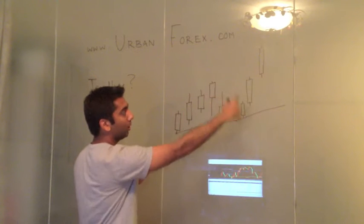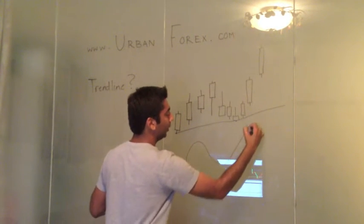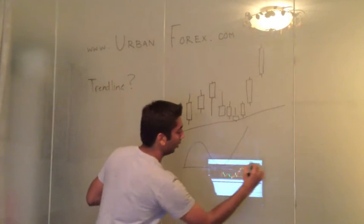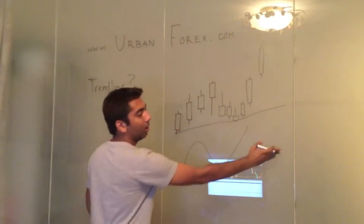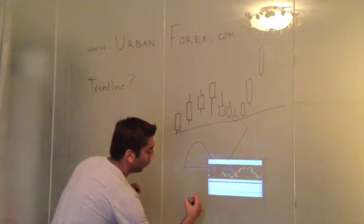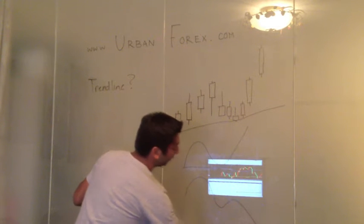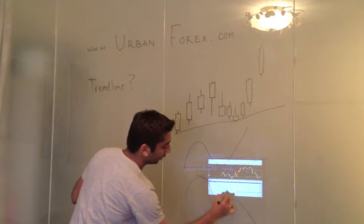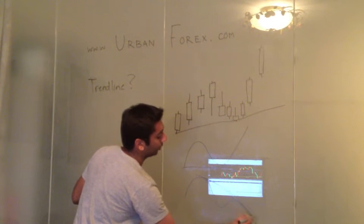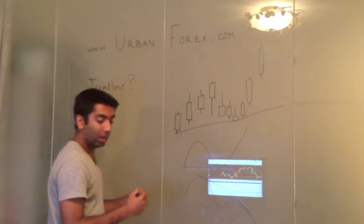If you were to draw this without candlesticks and just a line, this is what your chart looks like on a line graph. And if you connect your lows, you can obviously see which way your trend is going. The same happens the other way around — if you have a market going from up to down, you can connect your tops tip to tip. It gives you a better idea of which way the market is going.